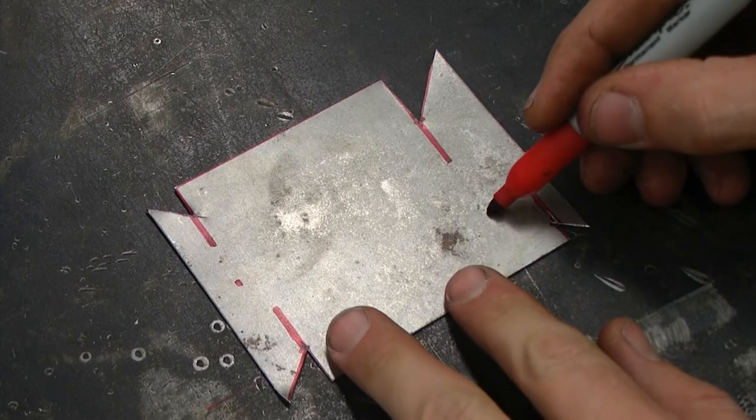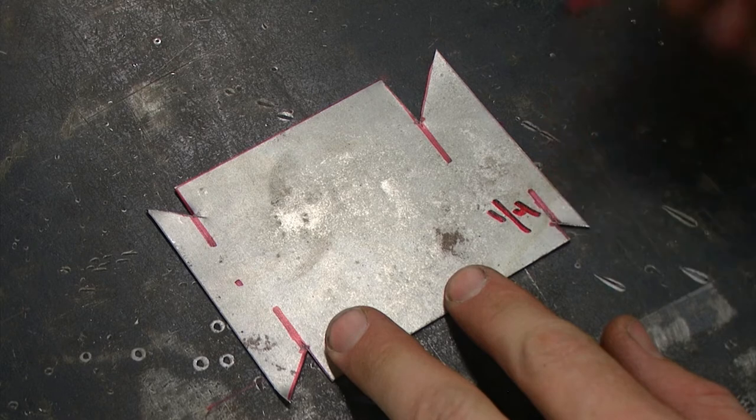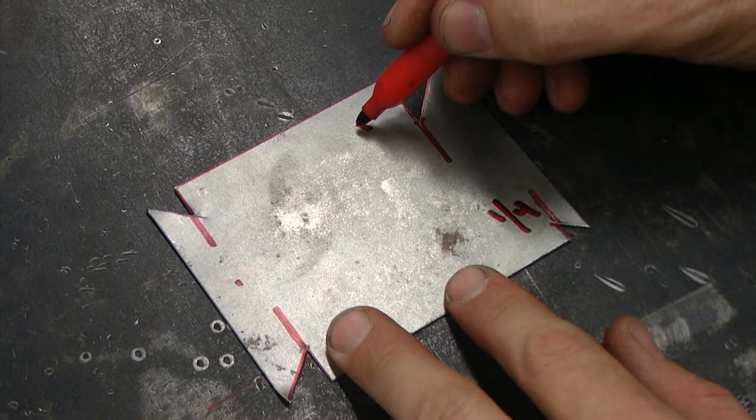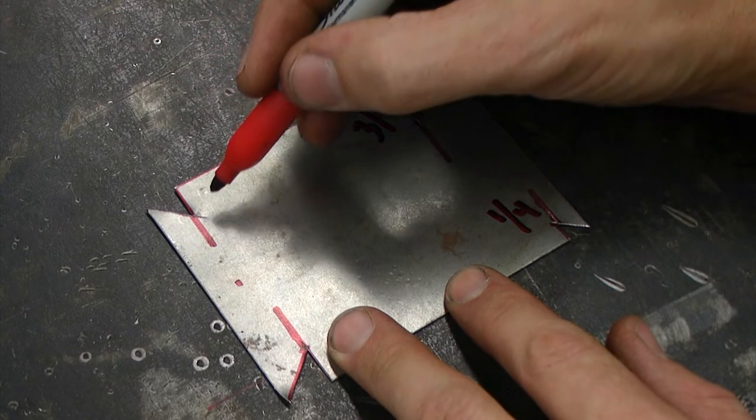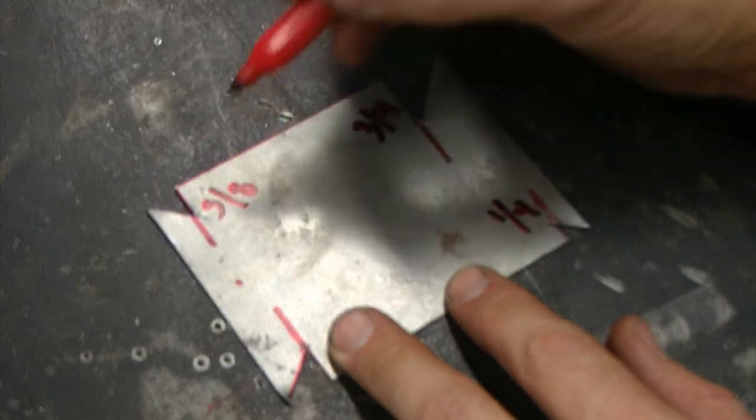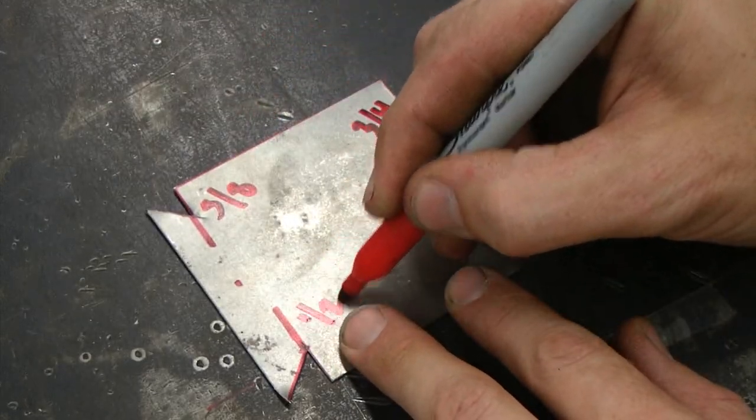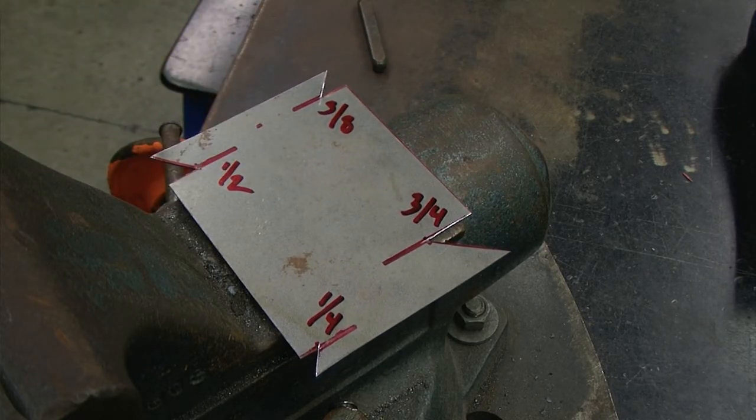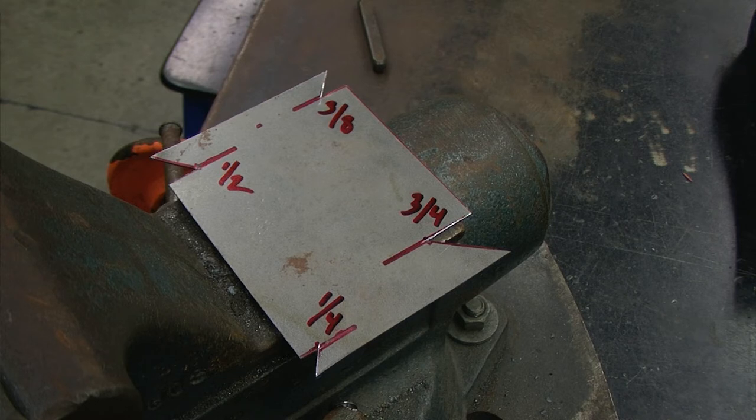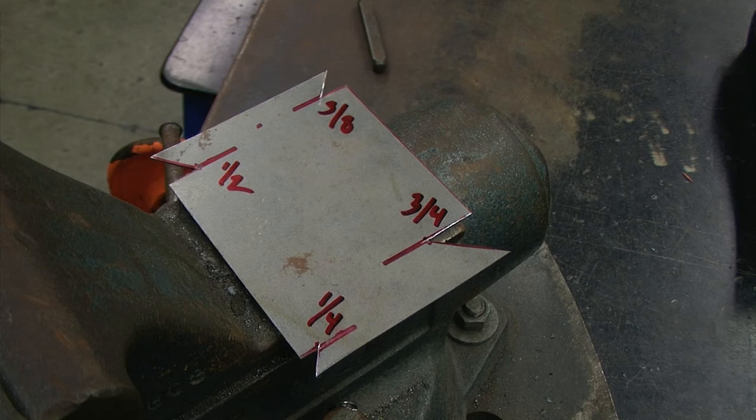Next, I am going to mark each corner. And then using the anvil portion of the vise with a ball peen hammer and safety glasses we are going to stamp our initials in the marking gauge.